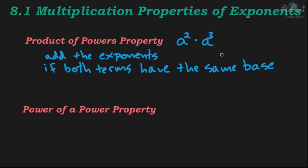Now the base, if you remember, would be the a in this case — a would be the base, and the exponent would be the two. In the second term, a would be the base and the exponent would be three. So what the product of powers property tells you is that all you have to do to find the answer is add the exponents, if both terms have the same base. Then you keep the same base for your answer. Our answer will be a, and when you add the exponents, it's just two plus three, which is five.